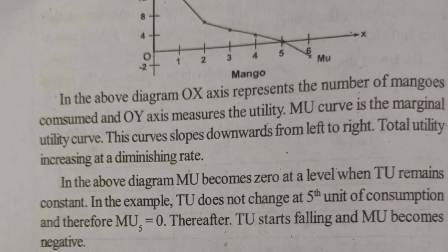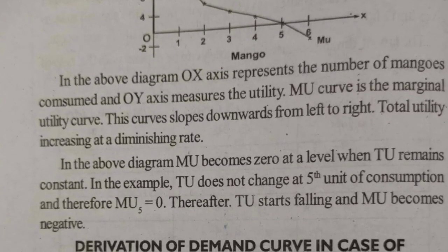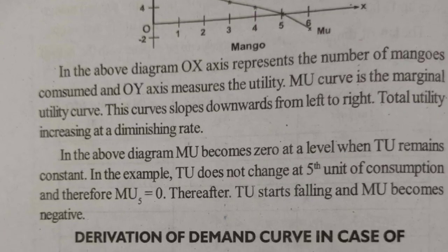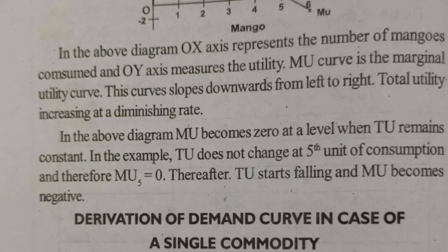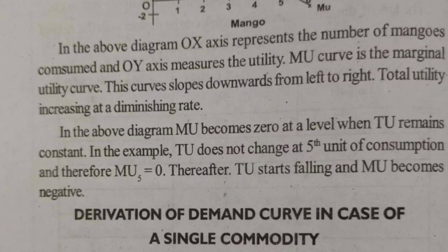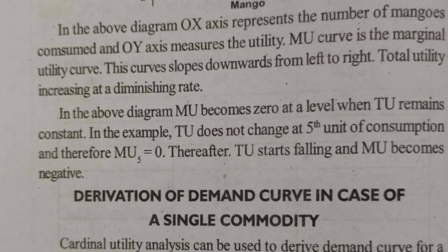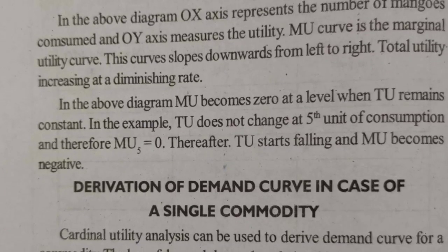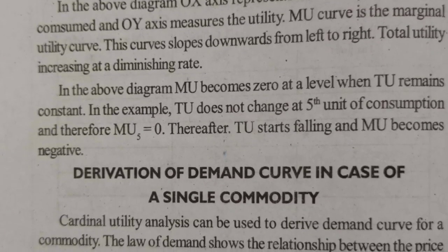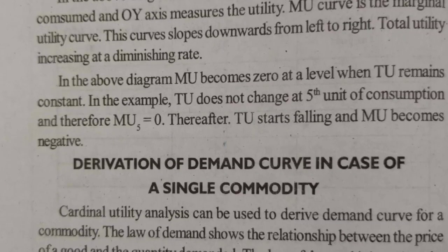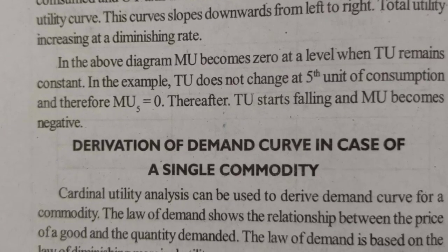Marginal utility becomes negative when we keep adding units — that is the Law of Diminishing Marginal Utility. Now, the derivation of the demand curve in case of a single commodity: demand is the quantity of a commodity that a consumer is willing to buy and is able to afford at a given price, with a given income.